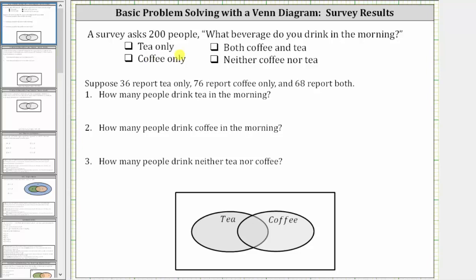A survey asked 200 people what beverage they drink in the morning. The choices are tea only, coffee only, both coffee and tea, or neither coffee nor tea. Suppose 36 report tea only, 76 report coffee only, and 68 report both.